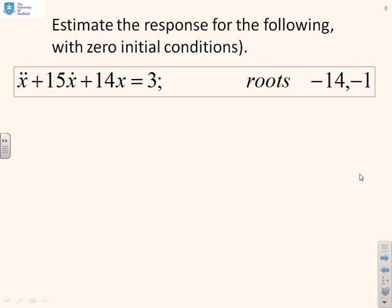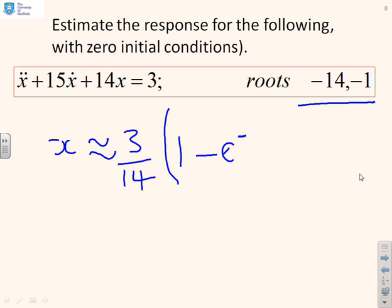Here's a second example just for you to look at. In this particular case you'll see ẍ + 15ẋ + 14x = 3 with roots at -14 and -1. So I can say that approximately my response is going to be 3/14, that's the steady state as you can see hopefully by inspection, into 1 - e^(-t).